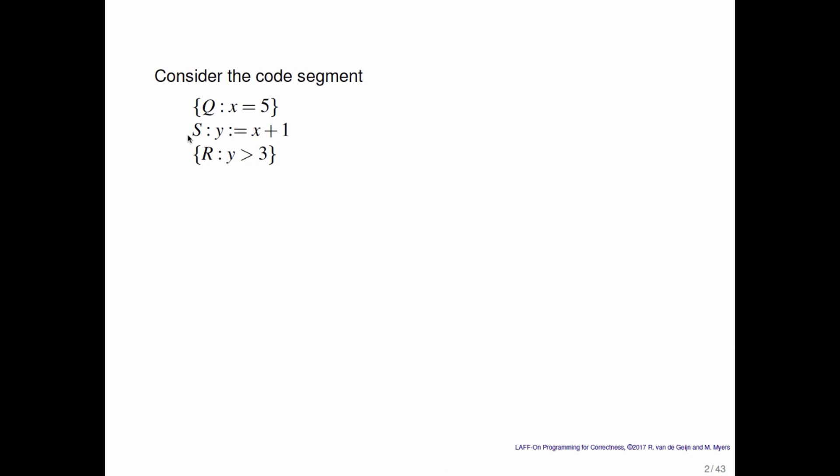So let's start with an example. Here's a code segment. A precondition is that x is equal to 5, y is computed as x plus 1, and then we want to be in a state where y is greater than 3. Is this a correct code segment?